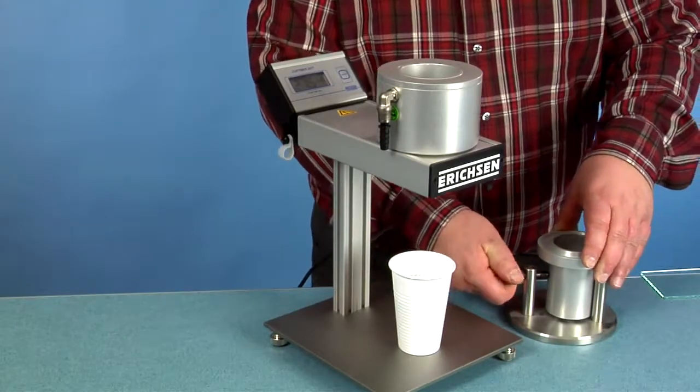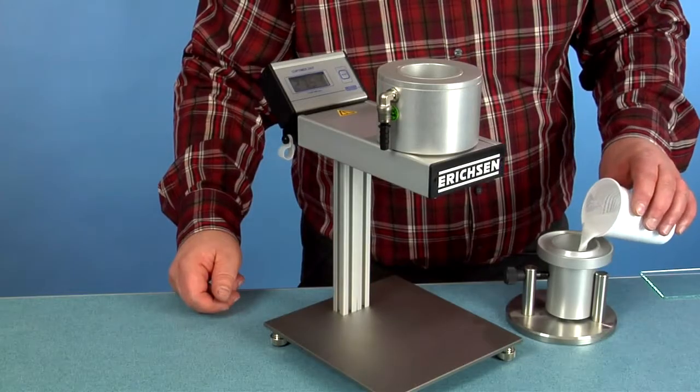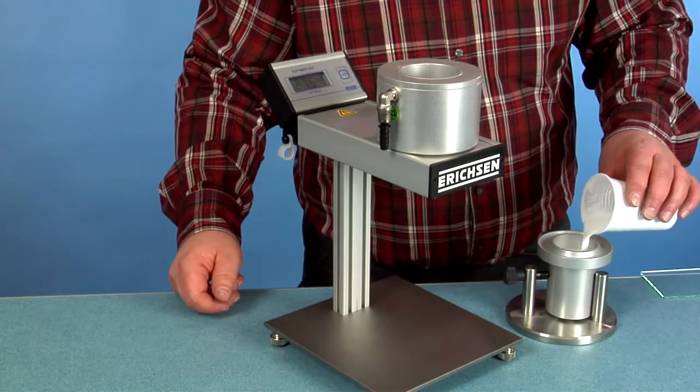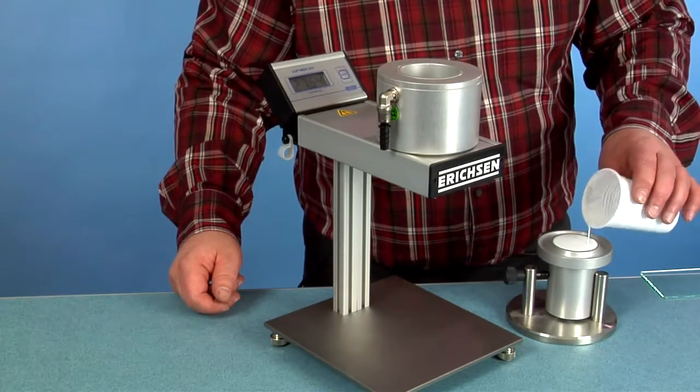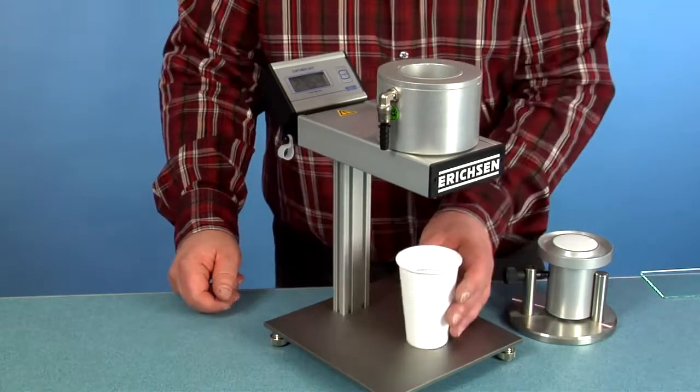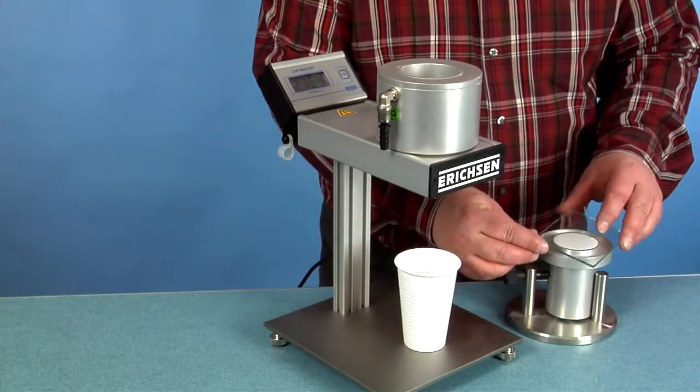Fixing the flow cup into the filling support stand. Filling with liquid coating material to be measured. Densely covered with a glass plate.